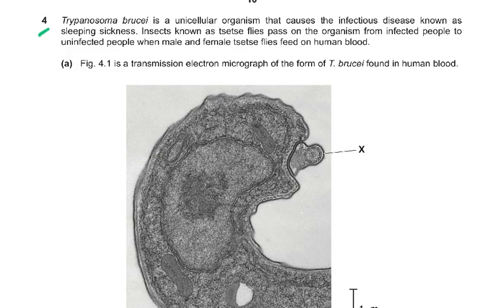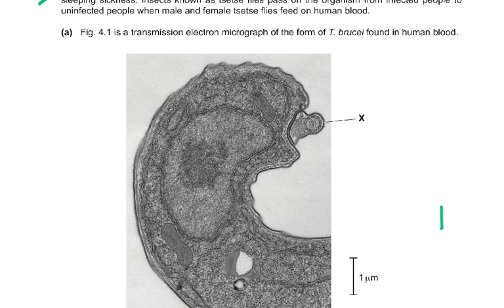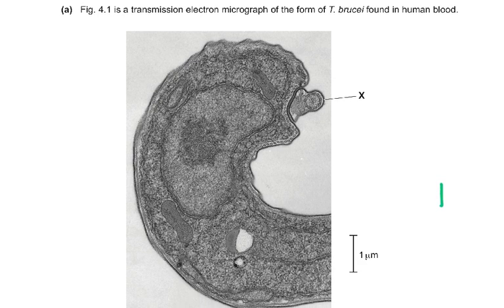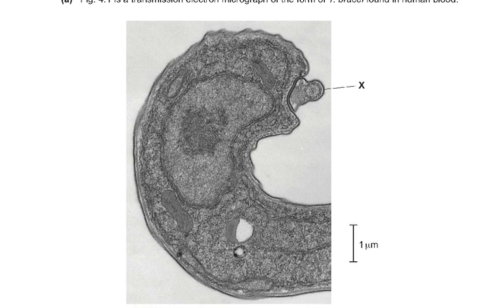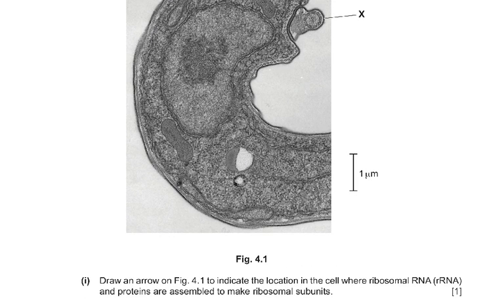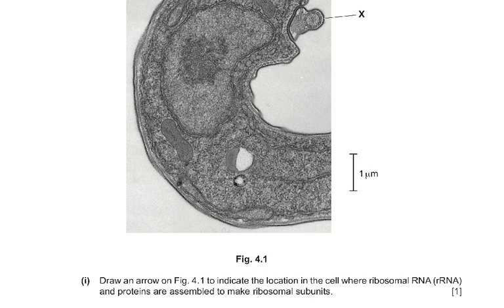Question 4. Trypanosoma brucei is a unicellular organism that causes the infectious disease known as sleeping sickness. An insect known as the tsetse fly passes on the organism from infected people to uninfected people, often when male and female tsetse flies feed on human blood. Figure 4.1 is a transmission electron micrograph of the form of T. brucei found in human blood. The question asks you to draw an arrow on figure 4.1 to indicate the location of the cell where ribosomal RNA will be made.